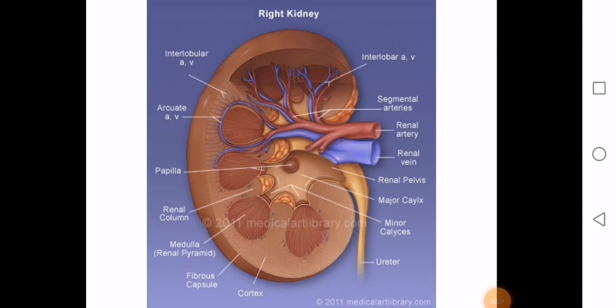There are two types of circulation in the kidney. One operates in the cortex, concerned with filtration of the blood. The other, smaller circulation operates in the medulla, responsible for concentration of urine. The loop of Henle and the collecting duct are placed in the medulla.